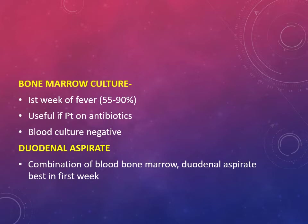When diagnosing a case of typhoid, the approach depends on the week of fever. In the first week, blood culture is best. In the second week, antibody testing is recommended, such as the Widal test. In the third and fourth week, urine culture and stool culture are preferred. So: first week - blood culture; second week - antibody testing; third and fourth week - stool and urine culture.